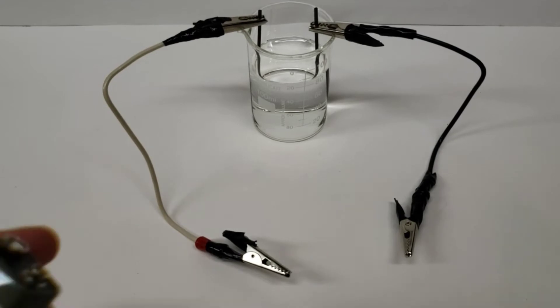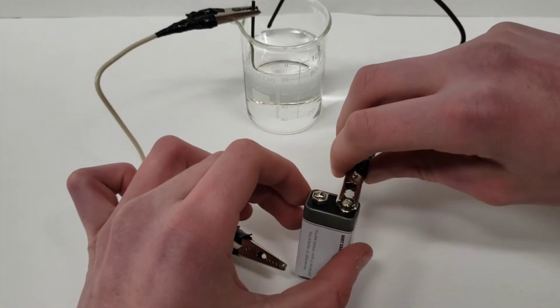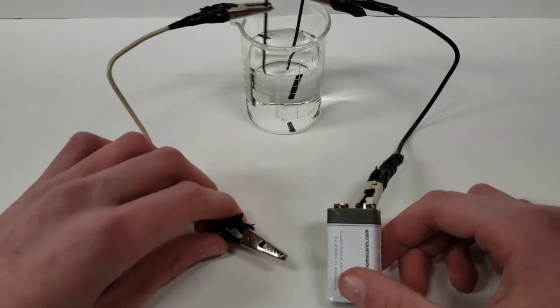And then repeat the exact same thing for the other electrode and the other wire. So now that both wires are in the water, it's time to hook up the battery. For the 9 volt battery, it's pretty simple, you just hook one wire to the positive end and one wire to the negative end.